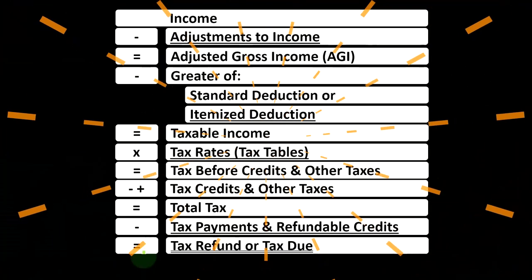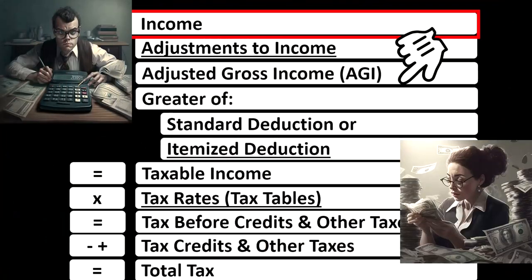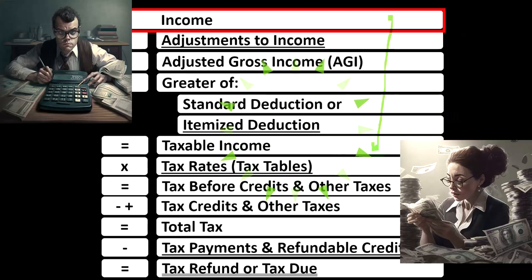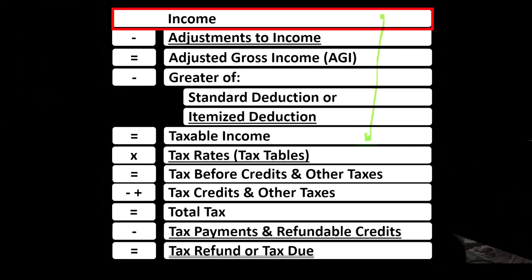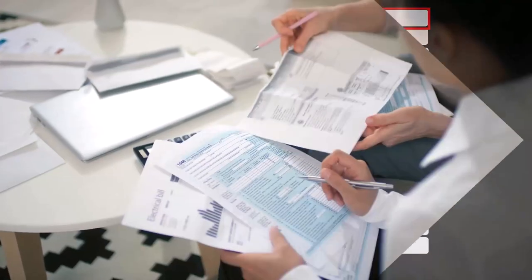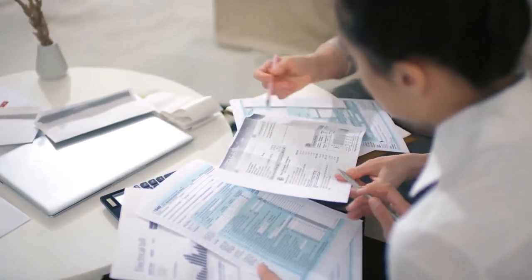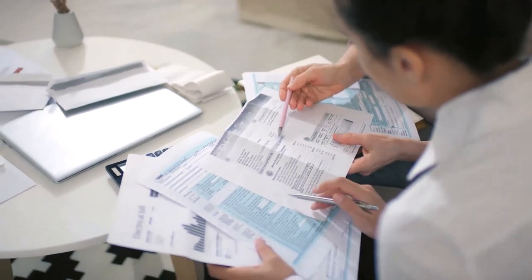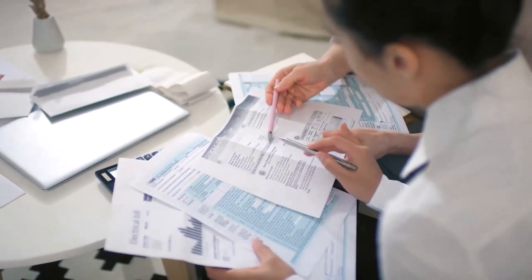Looking at the income tax formula, noting we're on line one — income. The first half of the income tax formula is in essence an income statement, with other forms and schedules flowing into these line items. One of those is the Schedule C, which has business income minus business expenses, with net business income rolling into line one of the income tax formula.